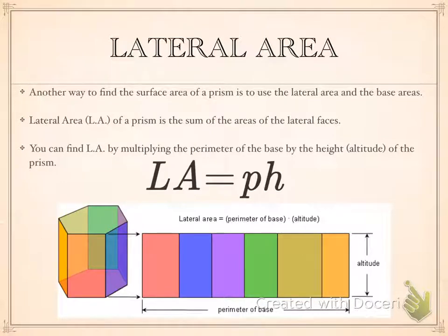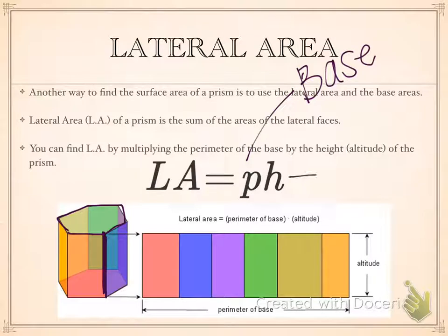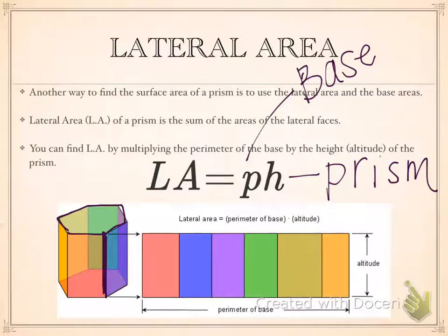When we put that into a formula, it looks like this: Lateral area equals perimeter, where P is the perimeter of the distance around your base, times the height of the entire prism. So P is for your base, and height is for your prism. That's the first step when finding lateral area.